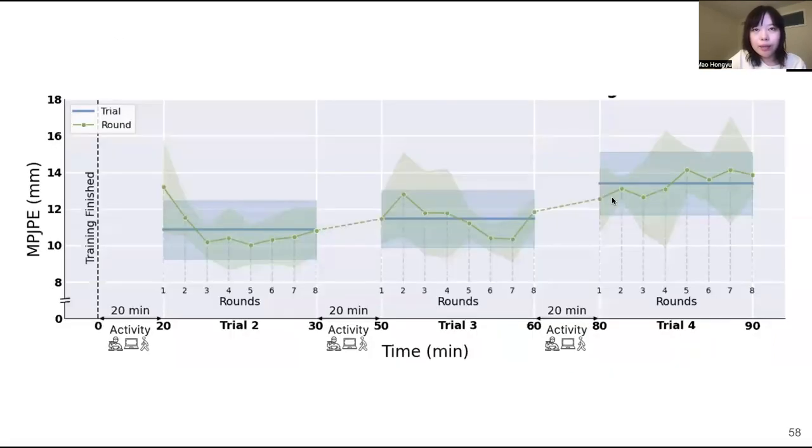Over time, there was a slight increase in MPJPE rising from 10 millimeters in trial two to 14 millimeters in trial four. This increase in errors indicates the shifting of electrodes to introduce noise, which we need to further investigate. But EITPose could still maintain a stable level of hand pose prediction for an extended period in this study, which ran for one hour and 14 minutes.